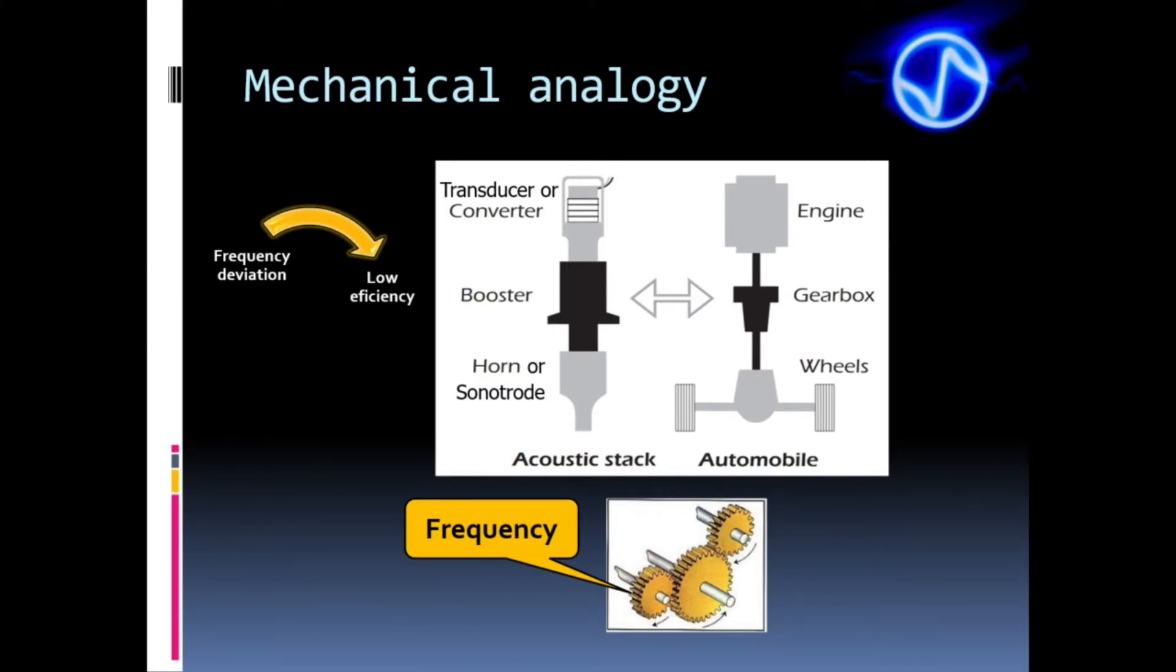If the acoustic stack is not efficient in power transmission, part of the energy will be dissipated in the stack itself. This will cause the acoustic stack to heat up. In turn, this heating results in more frequency deviation, making the acoustic stack enter a vicious cycle in which frequency deviation reduces the efficiency, creating heat and stress. More heat leads to more frequency deviation, more deviation generates even more heat until causing catastrophic system failure, stopping the machine and damaging the stack, the generator, or even both.